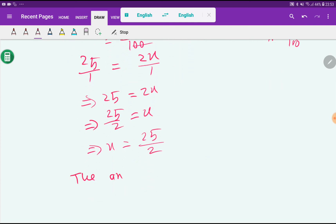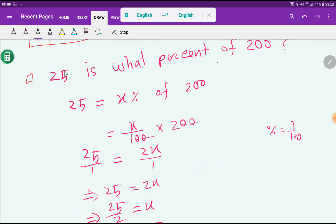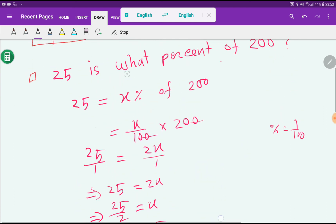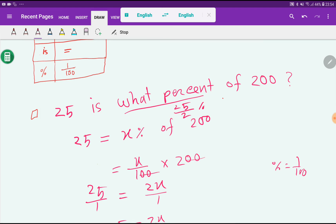The answer is 25 by 2 percentage, or 25 by 2 percent of 200.